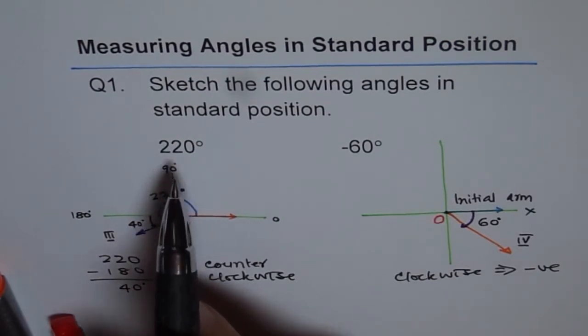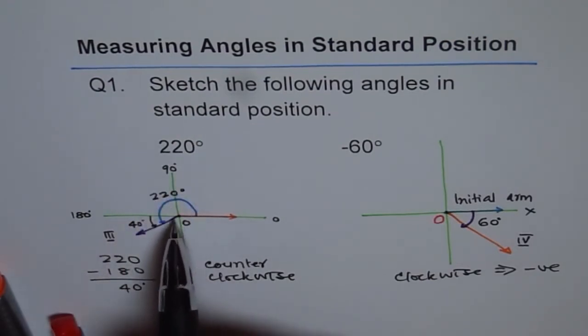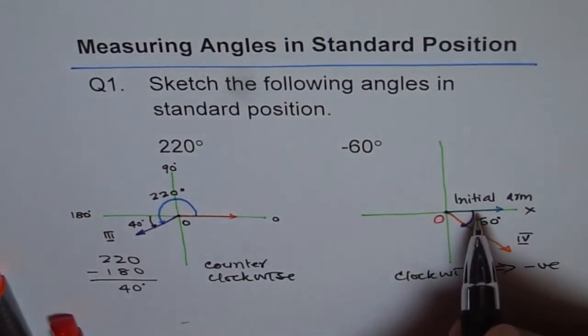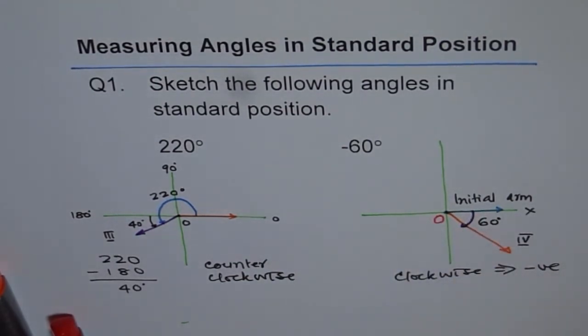Positive 220 means you have to go from positive x-axis about the circle 220 degrees counterclockwise. Negative 60 means that you have to go clockwise. So that is how negative 60 will be drawn. Now this is the way to sketch angles in standard position.